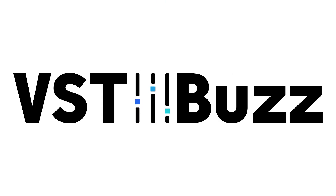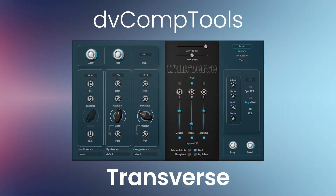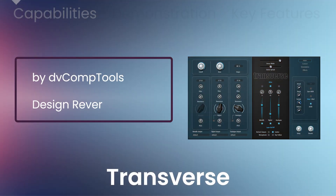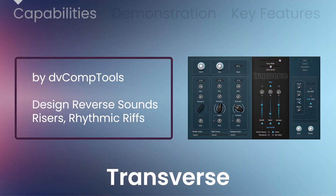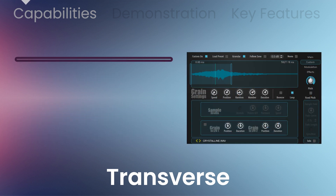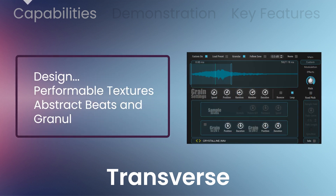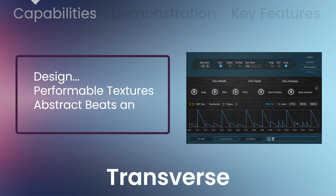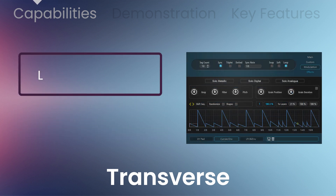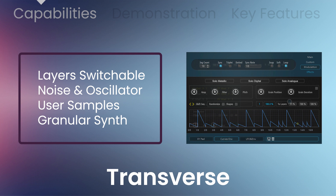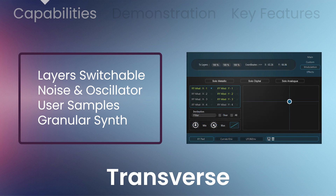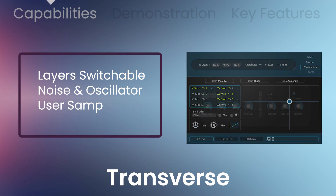VST Buzz presents 60% off Transverse by DVCompTools, a super fast way to design reverse sounds, risers, rhythmic riffs, performable textures, abstract beats and granular pads in Steinberg Halion. With layers switchable between noise and oscillator and a user sample section with a granular synth, the texture and sound capabilities are numerous.